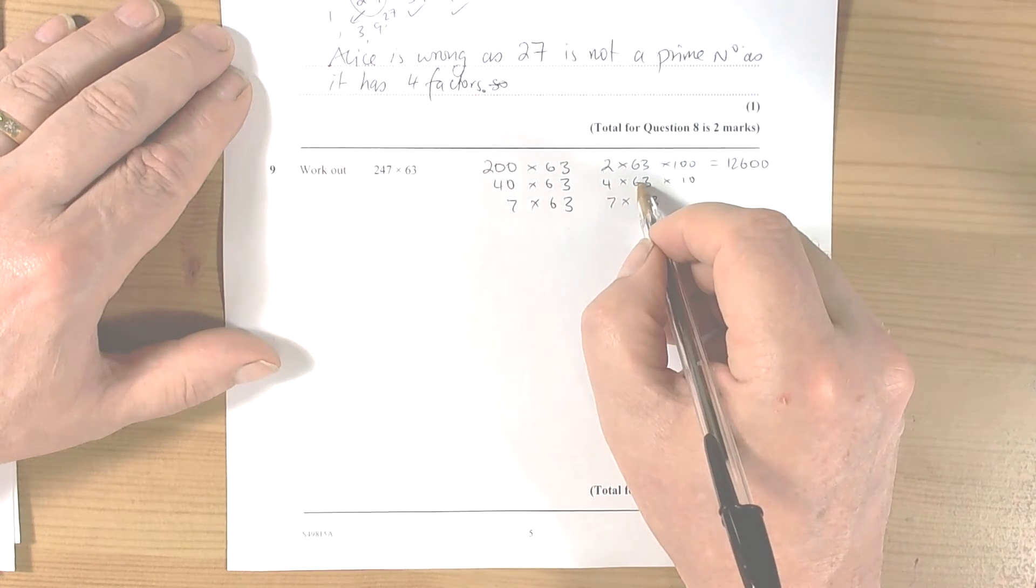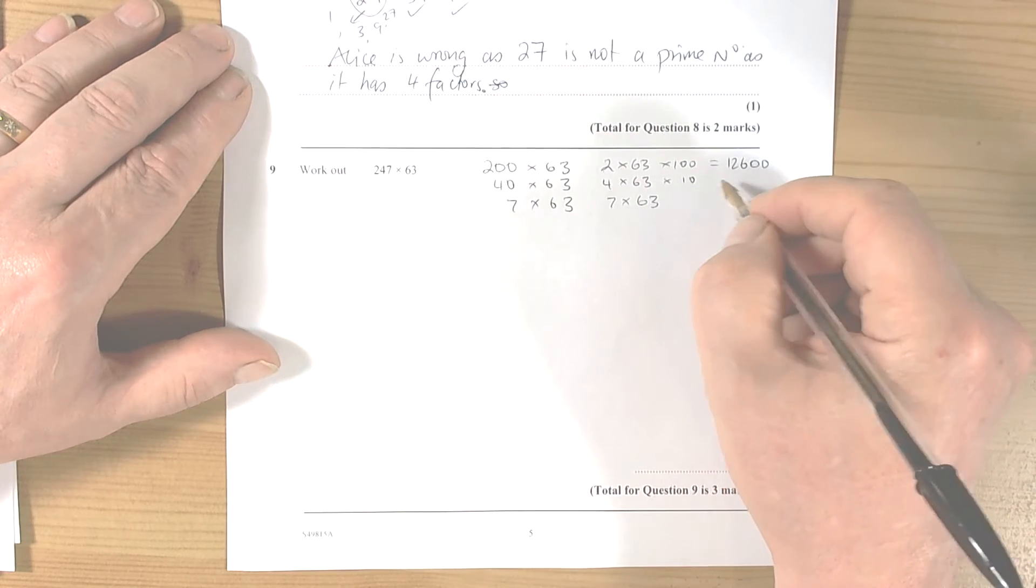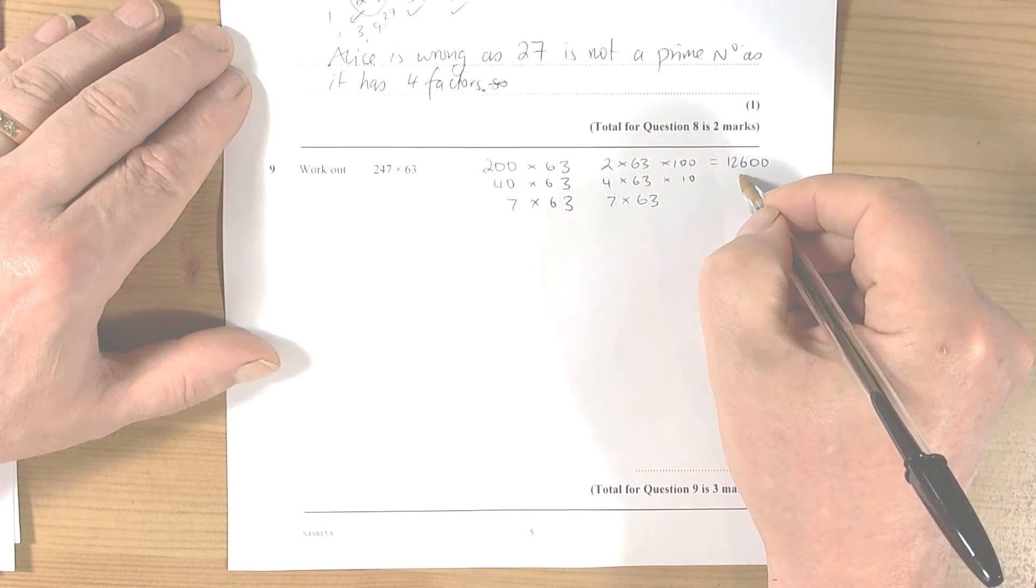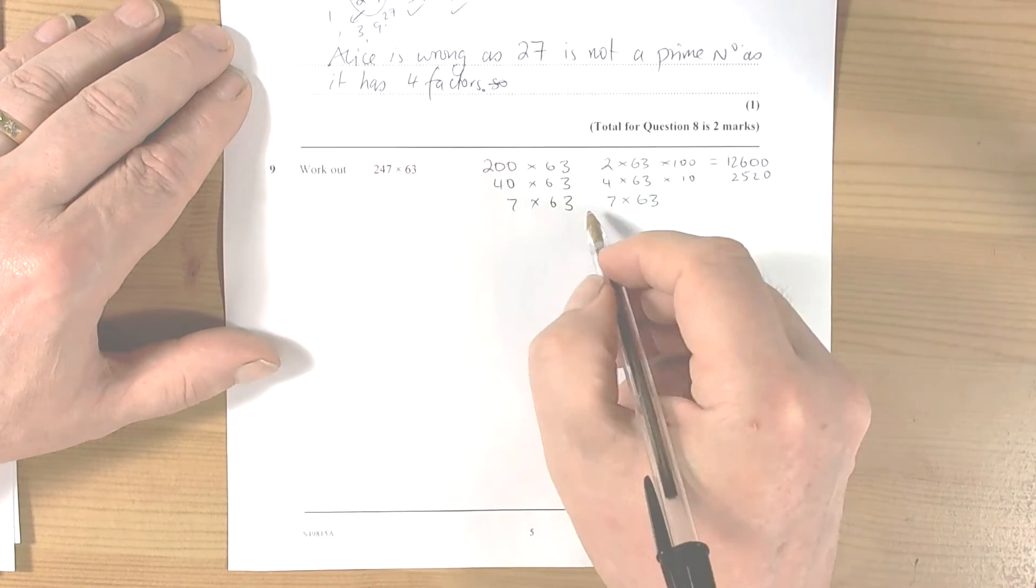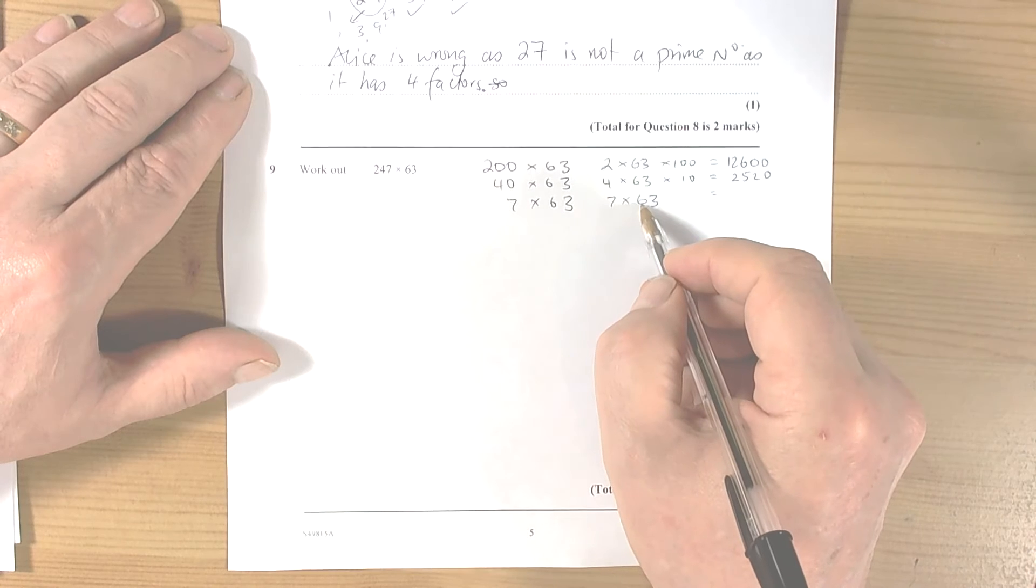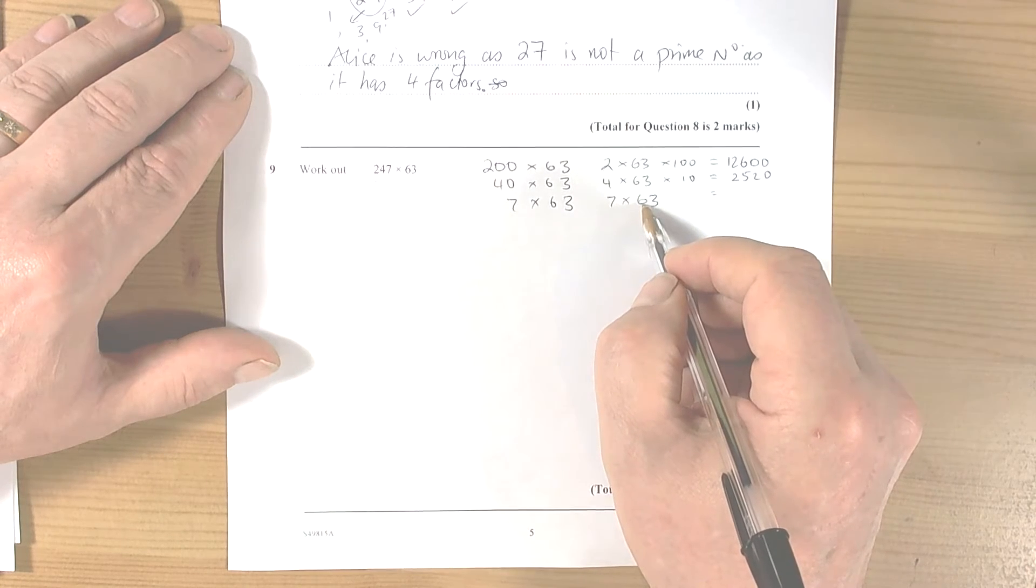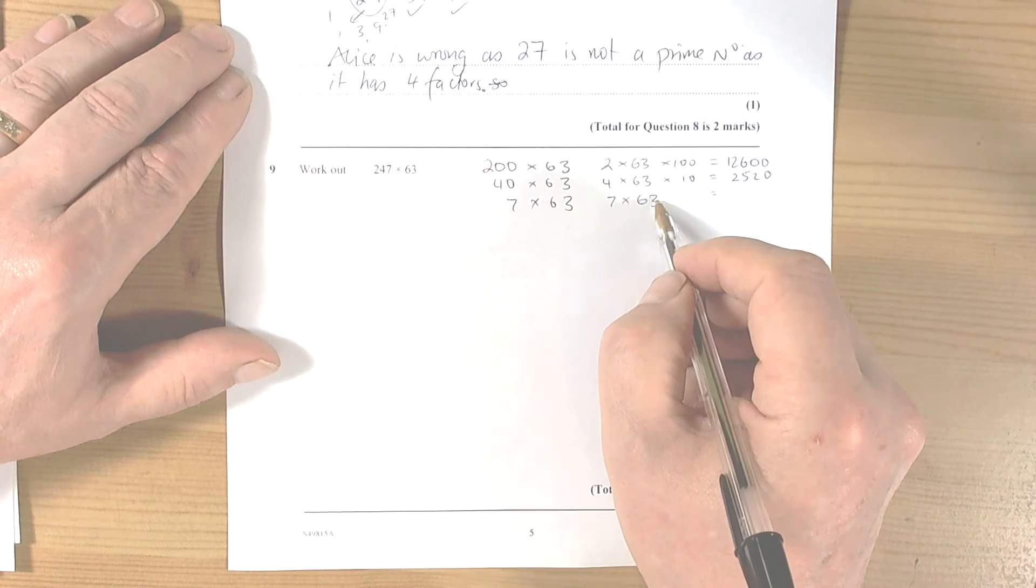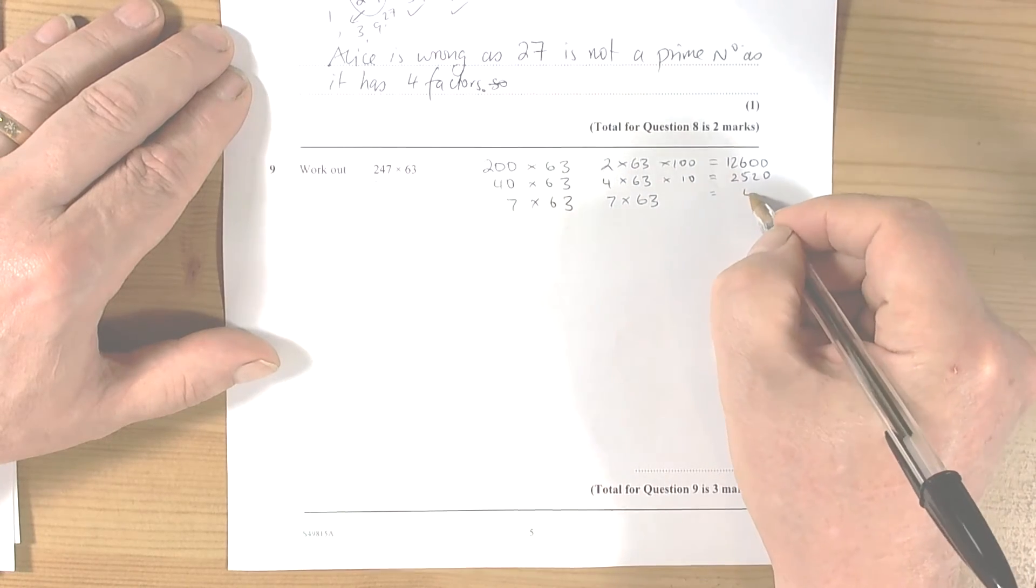4 times 63, well, 4 times 60 is 240, 252, times by 10 would make it 2,520. And 7 times 63, again, 7 times 60 is 420, and 7 times 3 is 21, so that's 441.